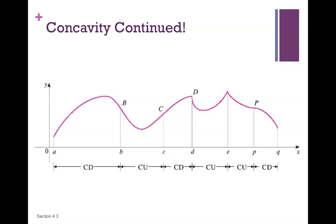Looking at the graph: from A to B it is concave down; from B to C, concave up; C to D, concave down; D to E, concave up; E to P, still concave up; and then P to Q, concave down.